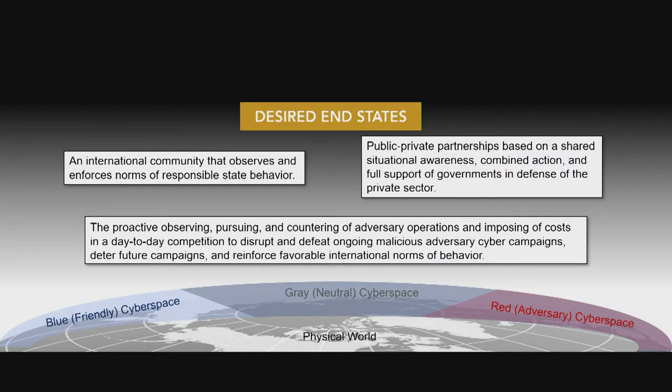A common starting point for a systems analysis for protecting a domain — whether it be land, sea, air, space, or cyberspace — is defining what the desired end state is. What do we mean by protecting our shared network domain? A few desired end states are shown here and include an international community that observes and enforces norms of responsible state behavior.